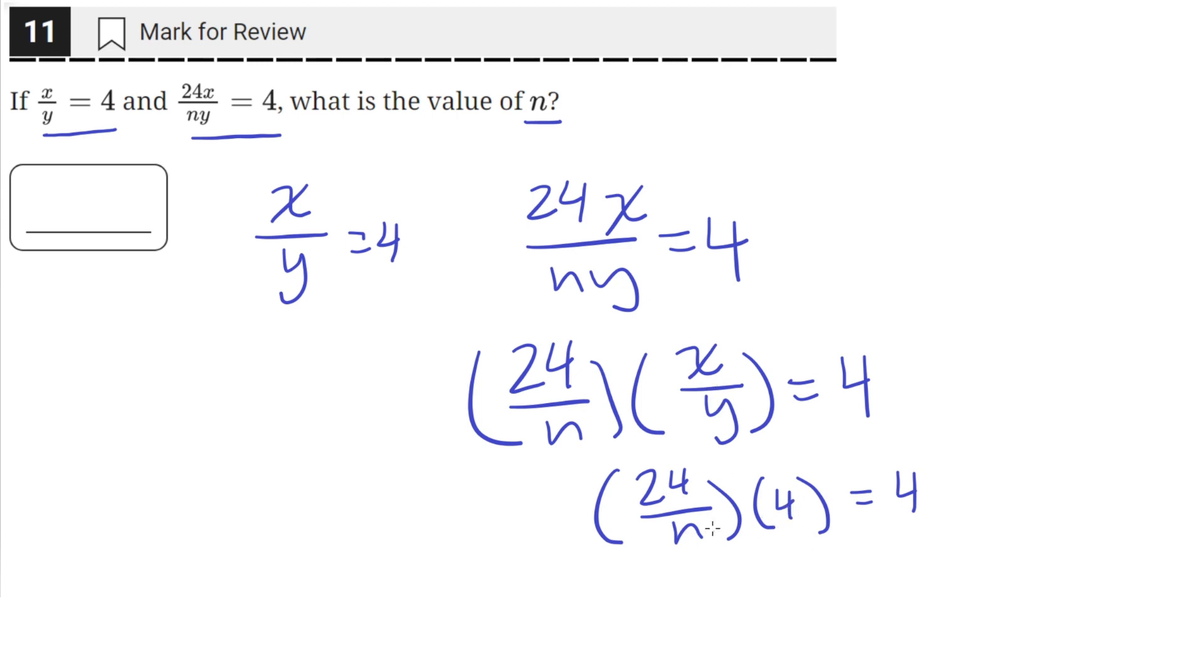Now we want to solve for the value of n, so let's isolate for n. Let's divide both sides by 4, so that'll cancel out this 4. We'll be left with 24 over n, which is equal to 1, because 4 divided by 4 is just 1.